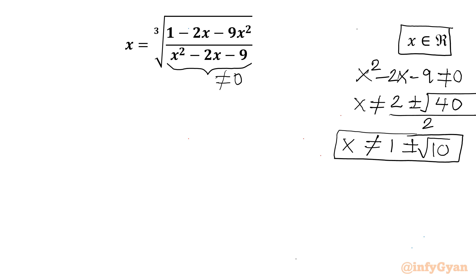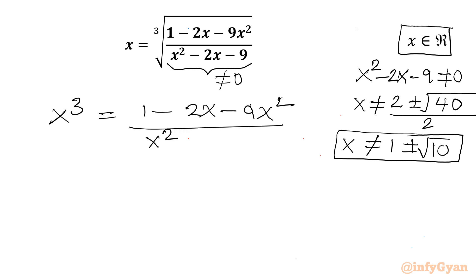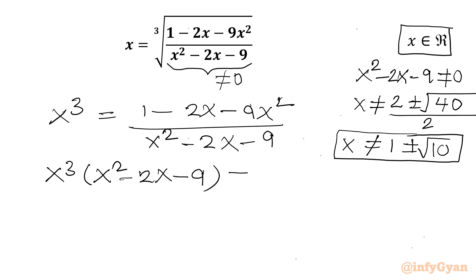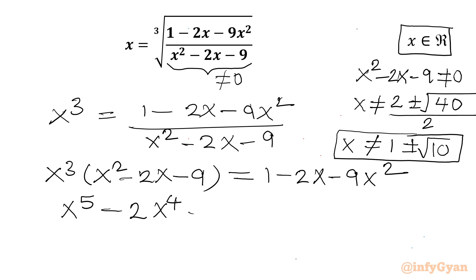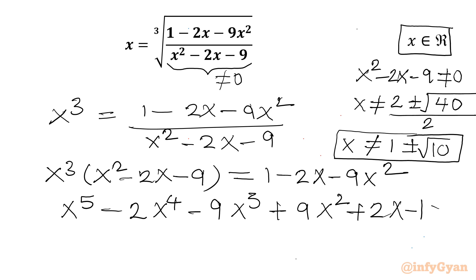Now I can cube both sides: x³ = (1 minus 2x minus 9x²) / (x² minus 2x minus 9). Cross-multiplying and expanding, taking all terms to one side: x⁵ minus 2x⁴ minus 9x³ plus 9x² plus 2x minus 1 = 0.